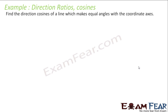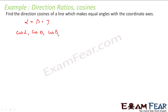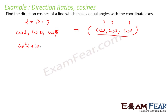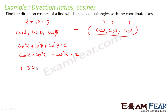Let us take one more example. We define the direction cosines of the line which makes equal angles with the coordinate axes. That means alpha is equal to beta is equal to gamma. So in this case, my direction cosines will be cos alpha, cos alpha, and cos alpha. But what is the value of alpha? We do not know. But we know that cos²α + cos²β + cos²γ = 1. Since all angles are equal, this becomes 3cos²α = 1, so cos α = ±1/√3.